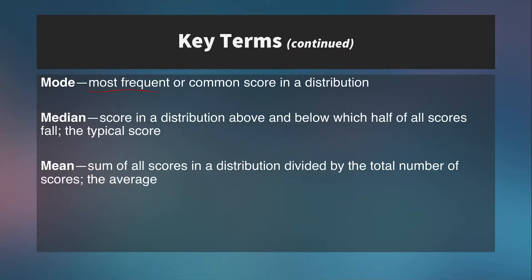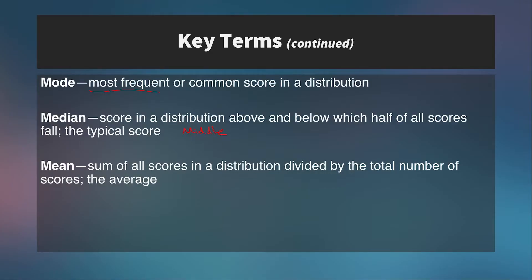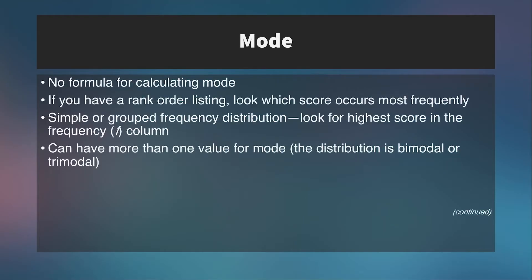The median is a score in the distribution above and below which half of all scores fall — what we call the typical score, the center-most score. If you have an even number of scores, there's no center score, so you take the average of the two center scores as your median. The mean is the sum of all scores in a distribution divided by the total number of scores — in other words, the average. We add up all the scores and divide by the total number.